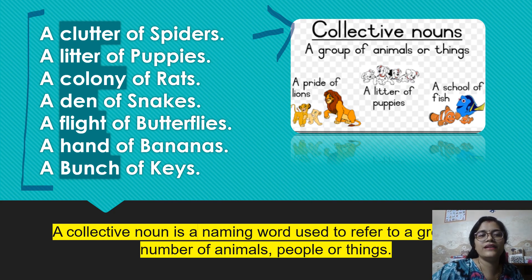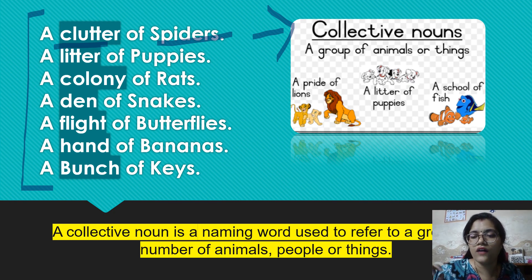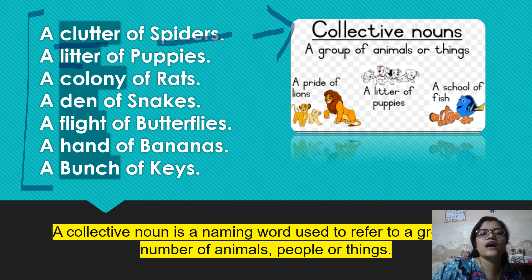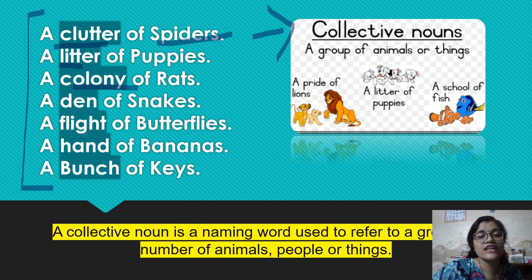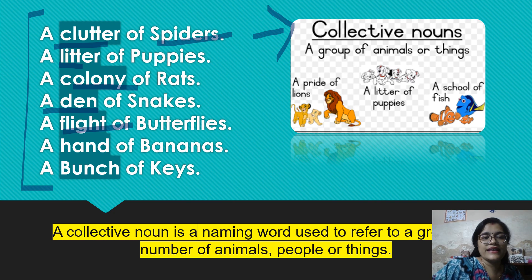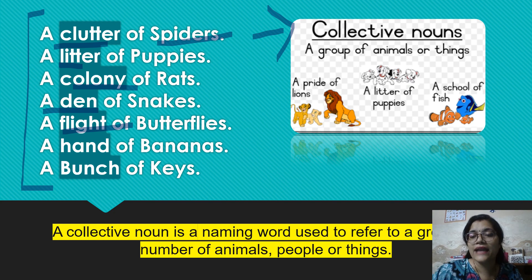So yaha par kuch examples. For example, spiders — jab bohut saari spiders ek jagah hoti hain, toh usko hum kya bolte hain? We use the word clutter — a clutter of spiders. Next: a litter of puppies — jab bohut saare puppies ek saath aapko dikhte hain, then you say a litter of puppies. Next: a colony of rats — chooho ke liye hum colony use karte hain. Next: a den of snakes — snakes ke liye word use kiya jaata hai den. Next: a flight of butterflies — when you see a lot of butterflies together, collectively a flight of butterflies. Next: a bunch of bananas, or a hand of bananas.